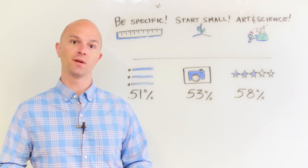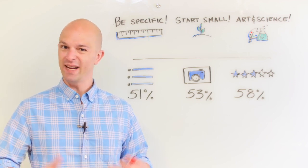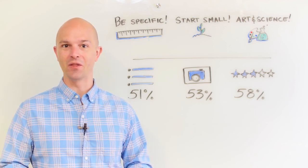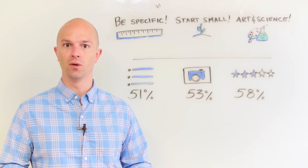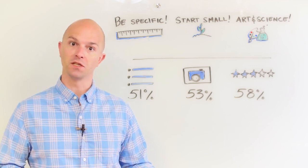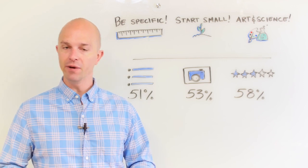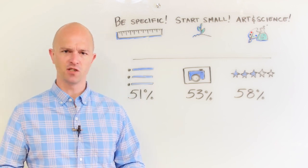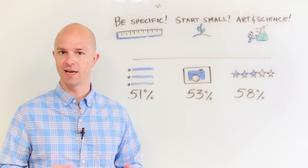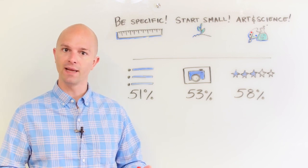But when you get to a certain level of sophistication, you don't just want to take the basic advice that other people give you. You want to have some control on knowing what works and what doesn't work for your products and your category. And when you get to that level, you might start asking questions: what's the best possible title? What's the best possible image? How do I run an A-B test?